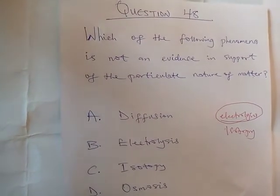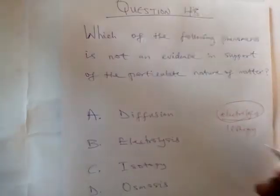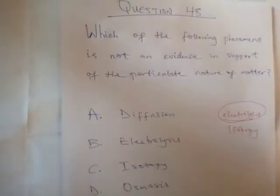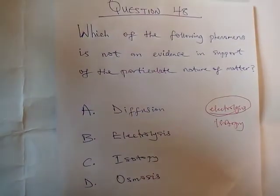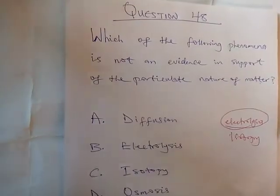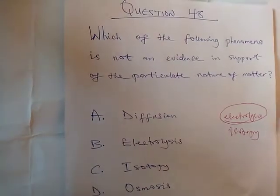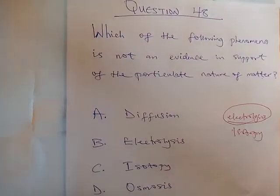But you know, Dalton's atomic theory later, it was what? It was modified. You know, Dalton's atomic theory actually depend on the four chemical laws that we know: law of conservation of mass, law of constant composition, law of multiple proportion. All those laws, so it's based on that.